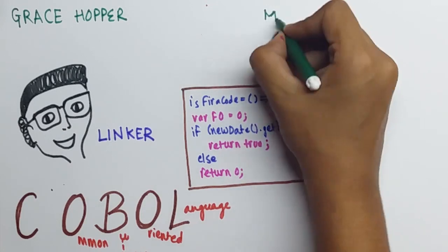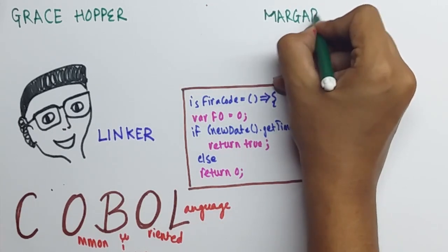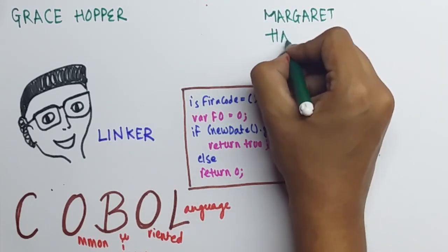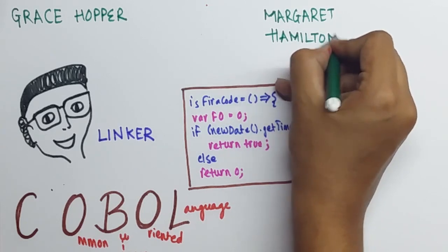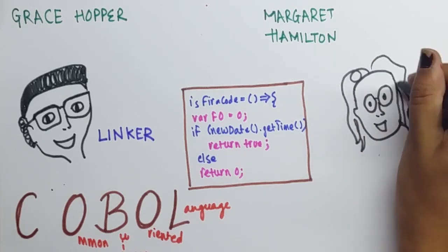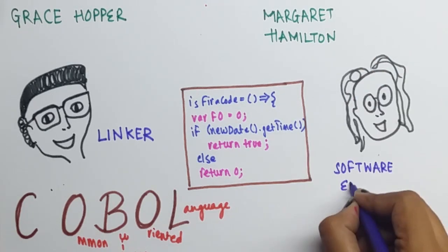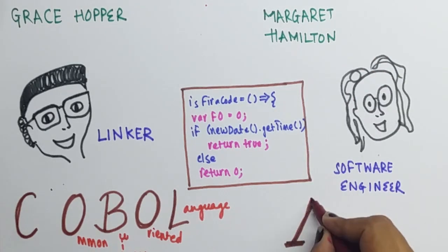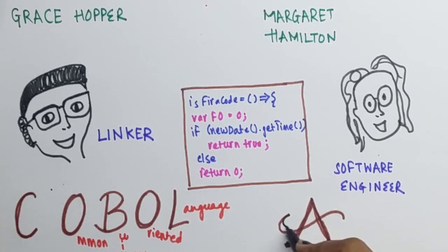Finally, we come to Margaret Hamilton. Margaret Hamilton is an American computer scientist and business owner. She coined the term software engineer. She was the director of the software engineering division for all the Apollo space programs that went to the moon.